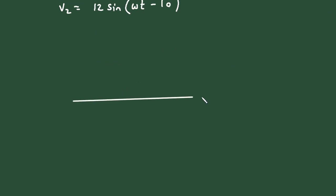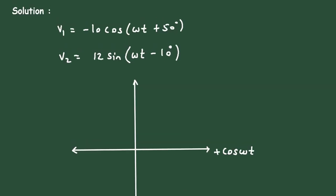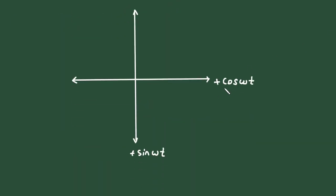We know from the phasor diagram that on the horizontal axis this is plus cos(ωt), on the vertical axis this is plus sin(ωt), and the angle between them is 90 degrees. On the opposite side of the horizontal axis is minus cos(ωt), and on the lower vertical axis is minus sin(ωt).